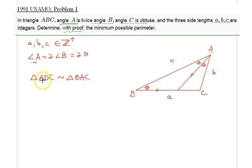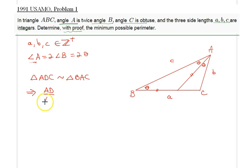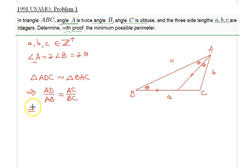Using this similarity, I can establish that AD over AB equals AC over BC. Plugging in the given side lengths, we find that AD is simply equal to B times C over A.